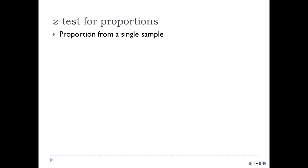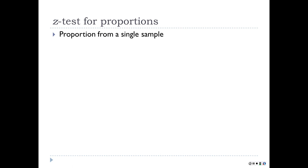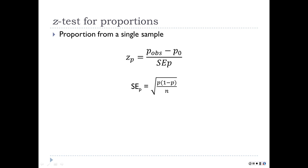The z-test for a proportion from a single sample. It's basically to see whether the split is different from 50-50. The null alternative proportion is usually 0.5. You take the observed proportion minus the null proportion — so this is often the difference from 0.5 — and divide it by the standard error of the proportion, and then you have a z. The standard error of the proportion only requires the proportion and n: it's the proportion times 1 minus the proportion, divided by n.